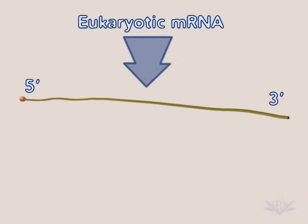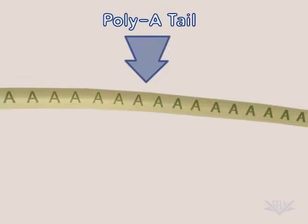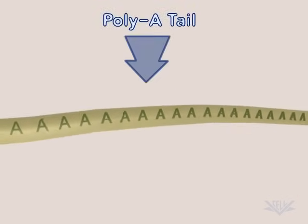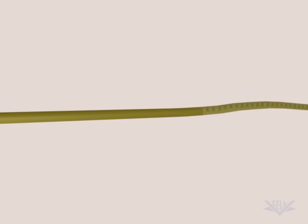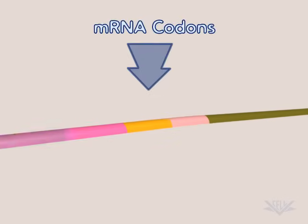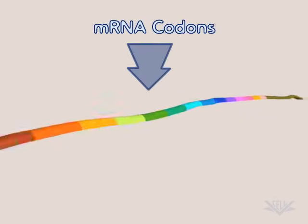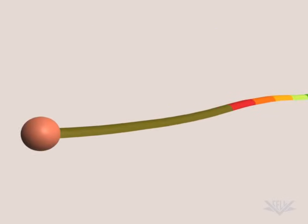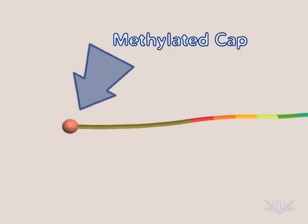Eukaryotic mRNA, the substrate for translation, has a unique 3' end called the poly-A tail. mRNA also contains codons that will encode for specific amino acids. A methylated cap is found at the 5' end.